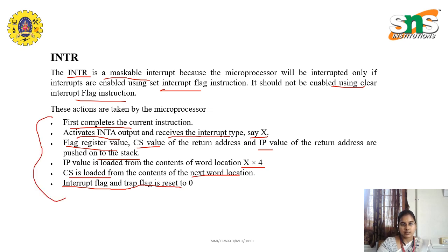So whatever the interrupts may be, first of all it should complete the current instruction. Next, it should give the interrupt acknowledgement and receive the interrupt type. Following that, CS and IP should be pushed onto the stack. IP value should be loaded with the word location at interrupt type multiplied by four, and CS — that is, the code segment — should be loaded with the next word location. Following that, the interrupt flag and trap flag are reset to zero. These are the basic interrupt operations followed in the 8086.